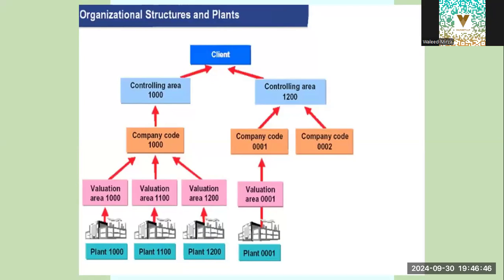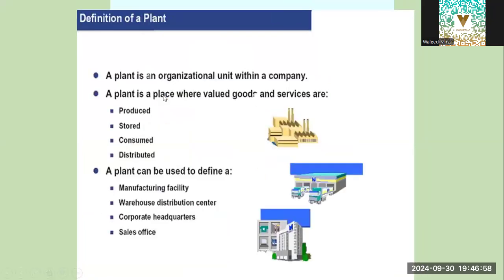The organizational layout is such that company codes are operational units that control plants and logistics in the supply chain. A plant is where stock is getting ready, being procured, or stored.